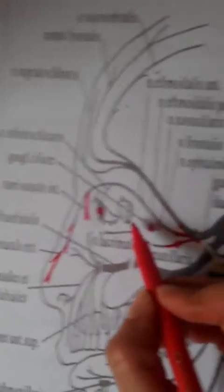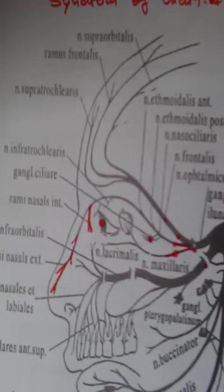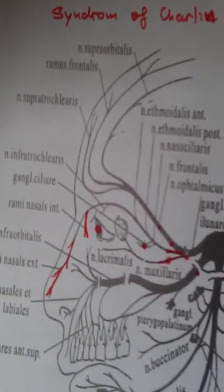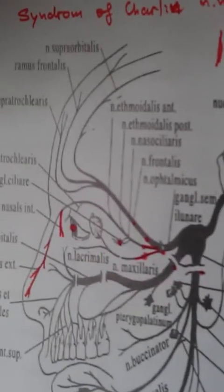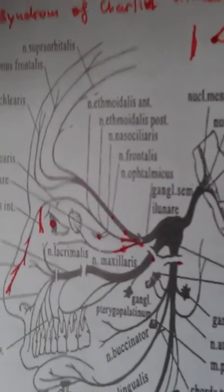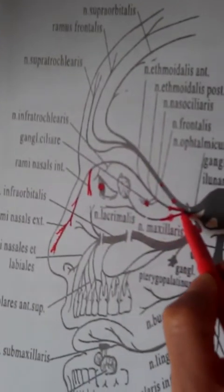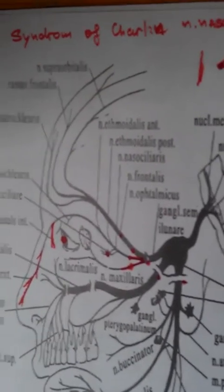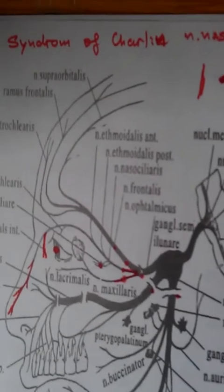Also, we see this lacrimal gland. When we cry, this gland is very, very active. So imagine when this nerve is affected, also the gland is affected, because there are small branches which are going to it, and it is very close to this Nervus Lacrimalis. Also, you notice that the nose is running, there is secretion from the nose and eye.